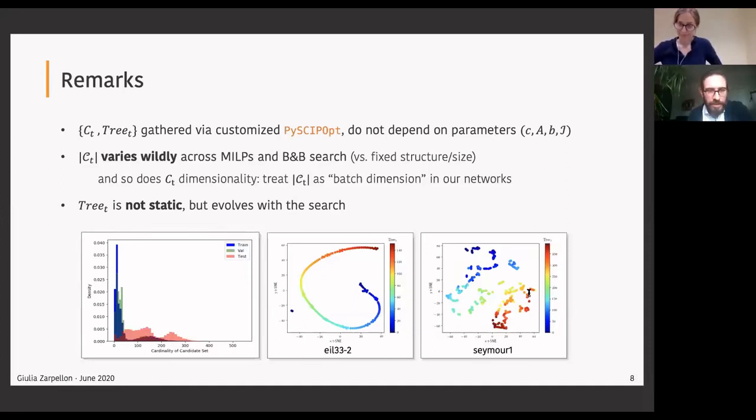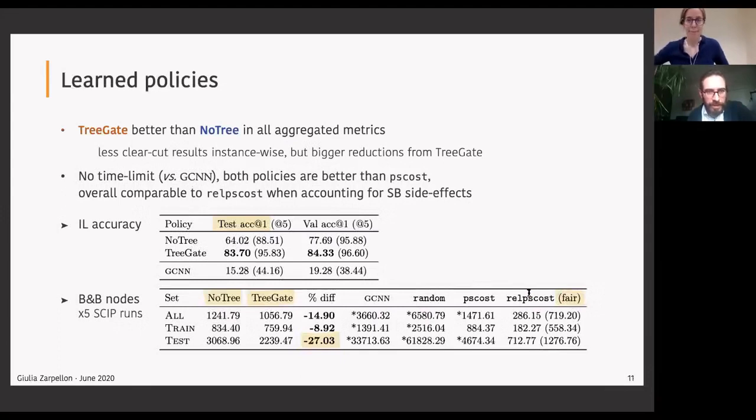Gautam Sechadri asks, do you have a sense for the sensitivity of the results, both accuracy relative to relpscost and time to solve, to the number of training MIP instances used? Not really. Before arriving at these results, when we were curating the dataset, we definitely experimented with less instances and so on. But I think one experiment that we could do would be maybe to still keep the number of instances we have and maybe swap them for training and test and see what will happen. Also note that we do have only 27 MILP instances, but the number of data points that we use for training our policies is much bigger. In the test set, for example, I think we have around 30,000 data points to test on.